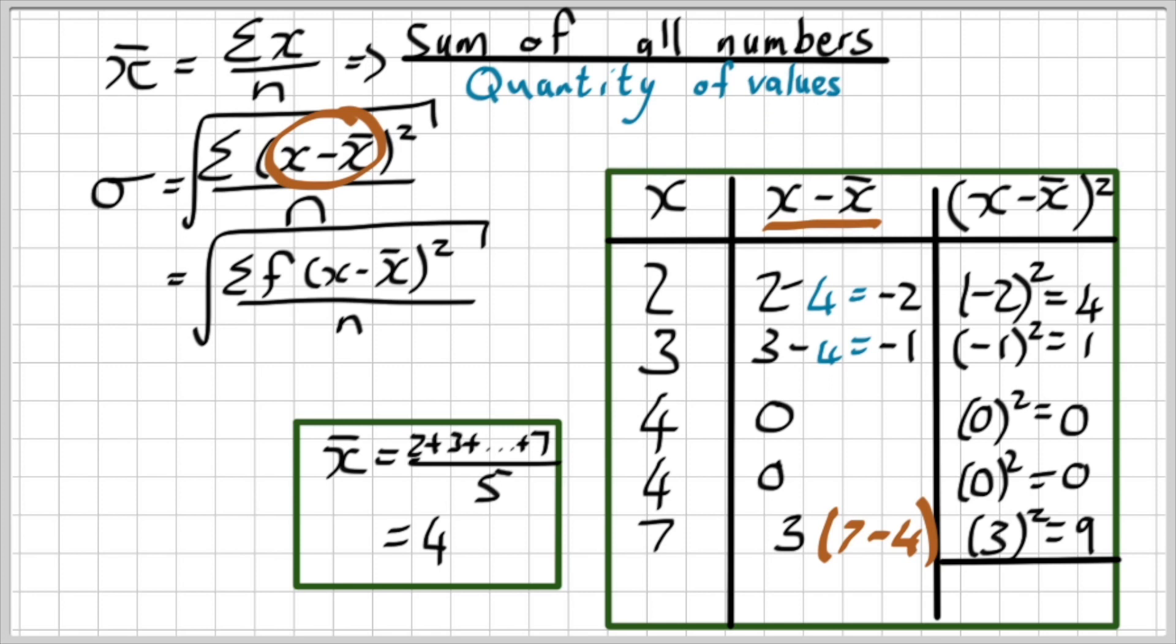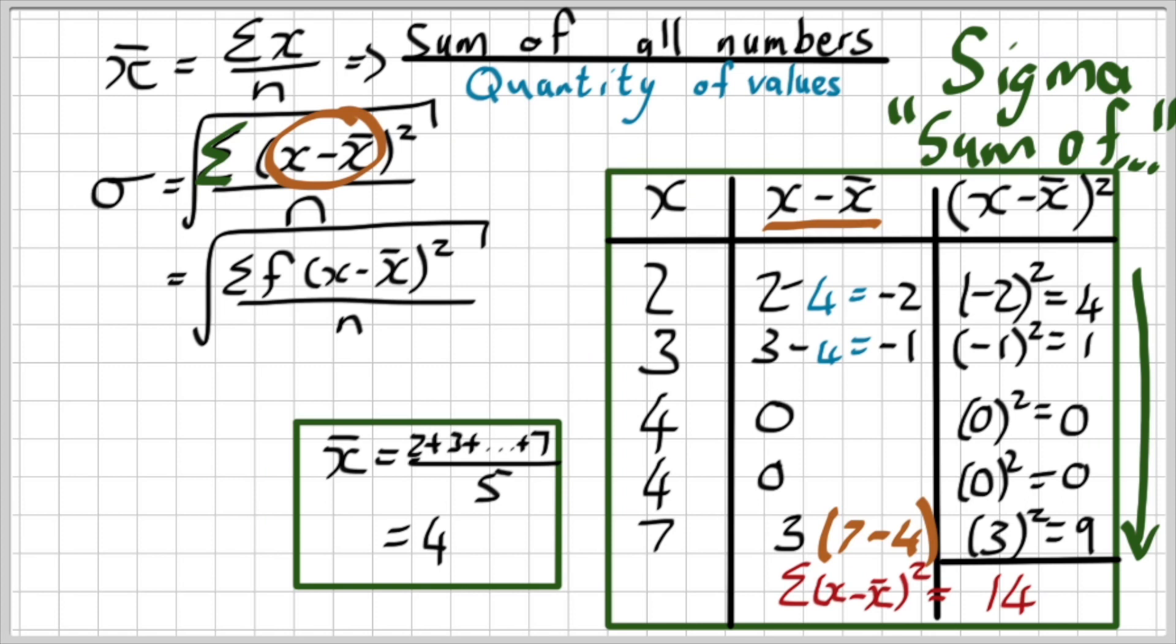Now what does the formula say here at the top? Now you will not understand this at this moment, but that little sign there is the sign in maths for sum of. We call this capital sigma, sigma with a capital S, which means sum of. So when I look at this, they are telling me I need the sum of the x minus x bar squared. So I need to add these values up, and that gives me 14.